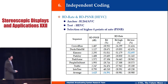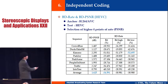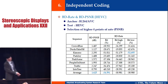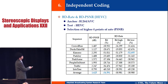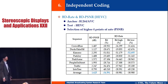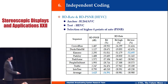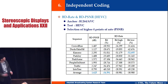HVC shows a significant gain of around 34% bit saving compared to AVC. However, HVC standardization has not been finalized, so it may be the best solution for NLT and real-time 3D services in the future — but timing is a concern. We also evaluated complexity: HVC showed approximately 3.5 times the complexity of AVC.